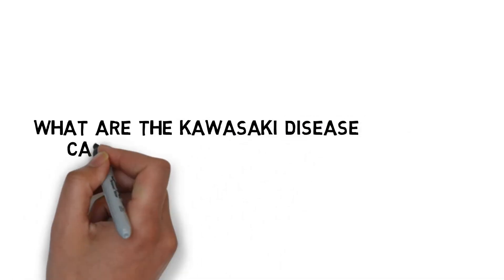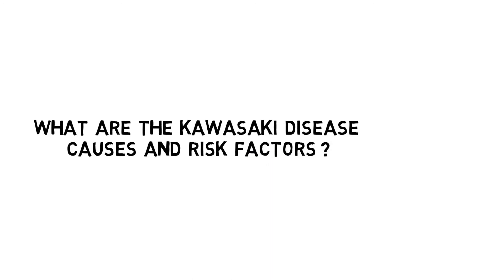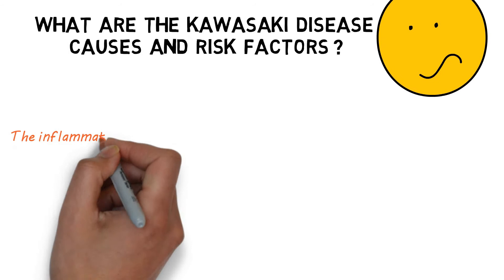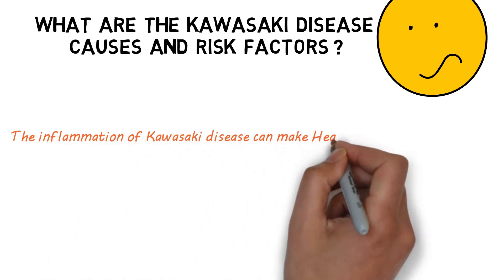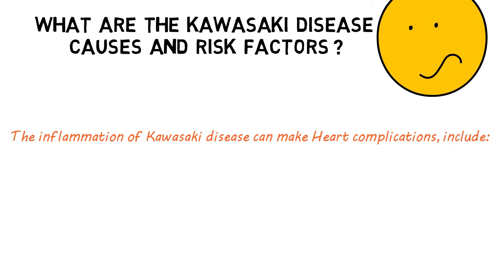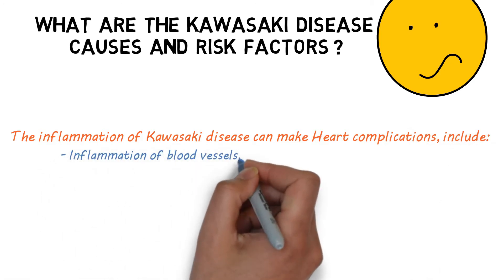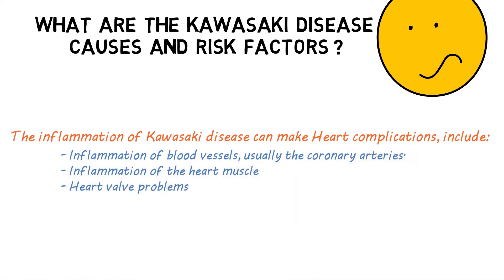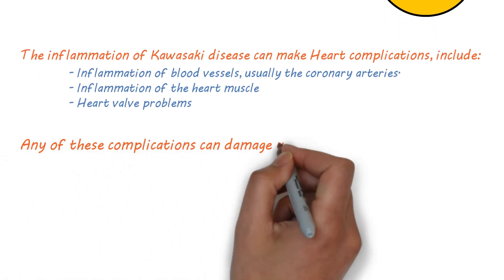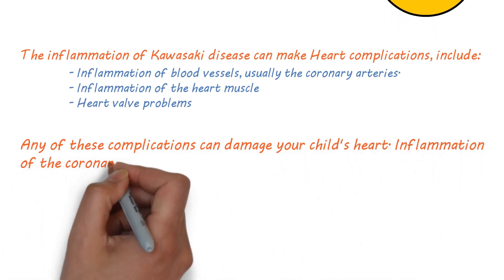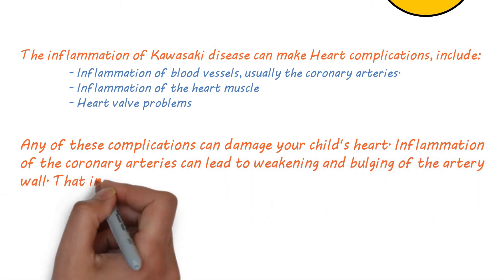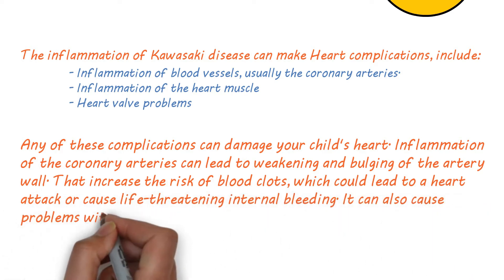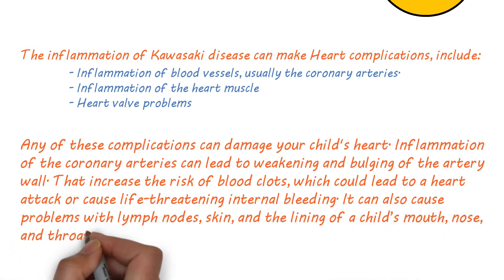What are the Kawasaki disease causes and risk factors? Complications include inflammation of blood vessels, usually the coronary arteries, inflammation of the heart muscle, and heart valve problems. Any of these complications can damage your child's heart. Inflammation of the coronary arteries can lead to weakening and bulging of the artery wall, increasing the risk of blood clots, which could lead to a heart attack or cause life-threatening internal bleeding.